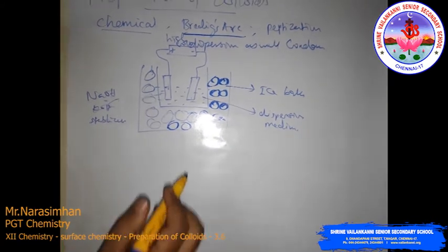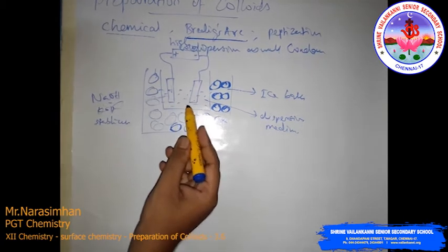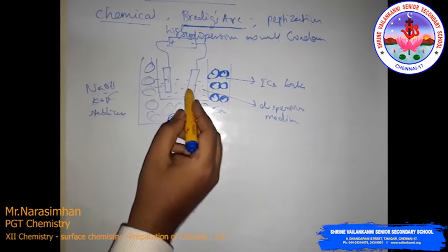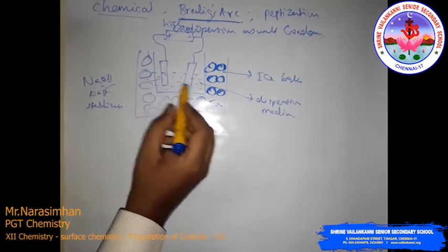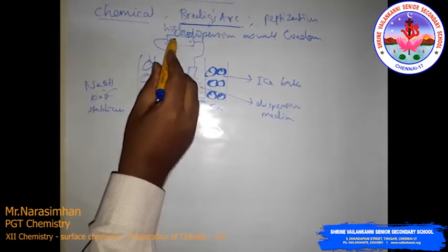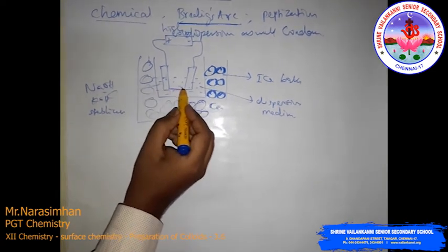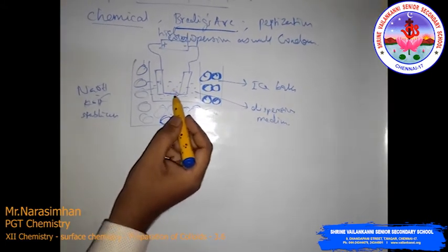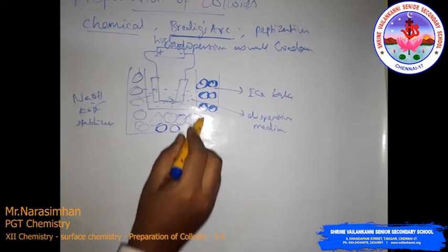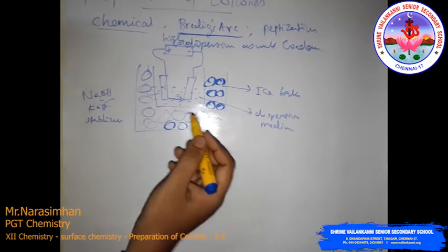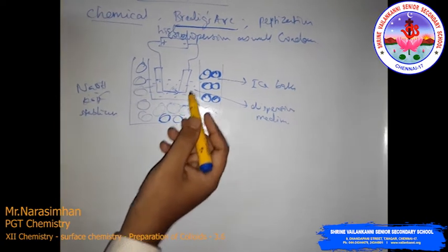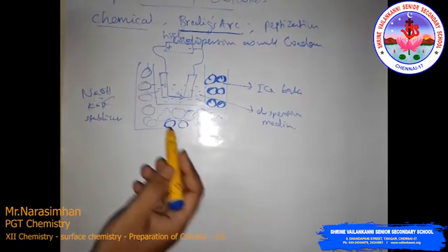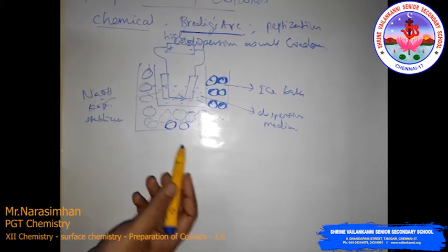When the electrodes touch, intense heat sparks are produced. The ice bath is used to cool the system. The intense heat vaporizes the metal, and the vapor then condenses to form colloidal-sized particles. This is called the Bredig's Arc method or electrical disintegration method.